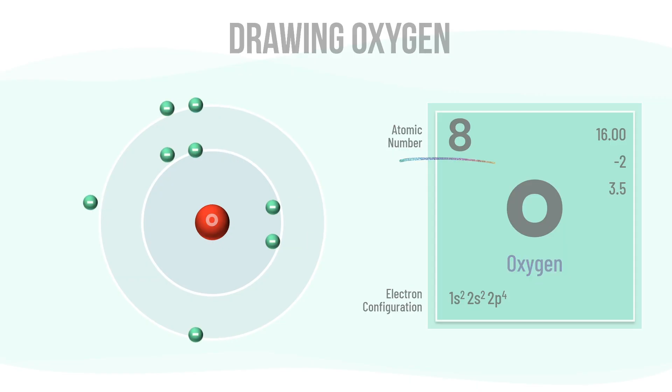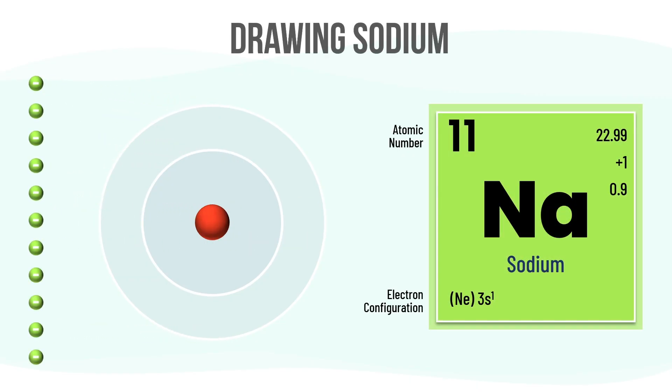Next, we draw the atom for sodium. Sodium has an atomic number of 11, which means it has 11 electrons. Now let's write the symbol Na in the center of the nucleus. We currently have 2 shells around it. Let's fill in the electrons: 2 in the first shell, 8 in the second, and 1 electron in the third shell. And that's it.